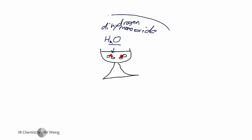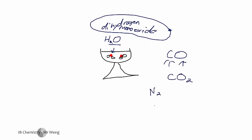So in case you ever forget water's name ever again at a party, it's dihydrogen monoxide. So that would make carbon monoxide and carbon dioxide. These ones here are elements — even though they are covalent substances, they're not compounds because they're not two or more different atoms. So that's just nitrogen and oxygen, so you don't do anything for those ones.